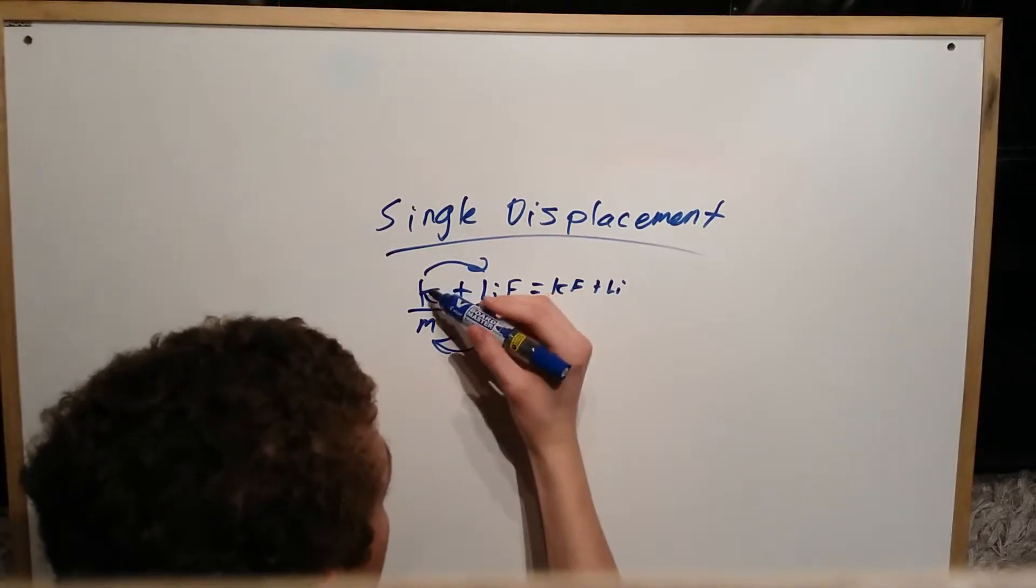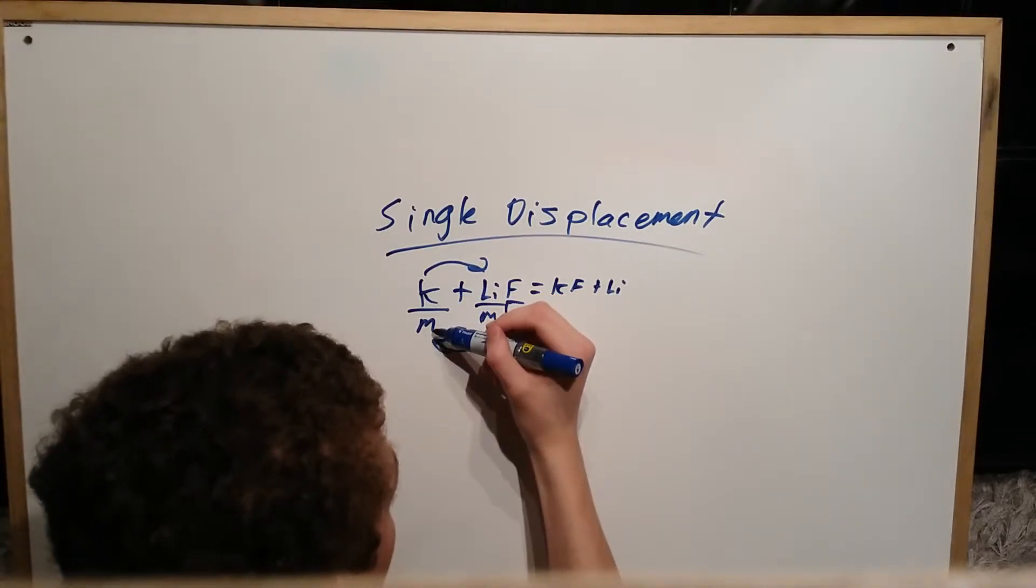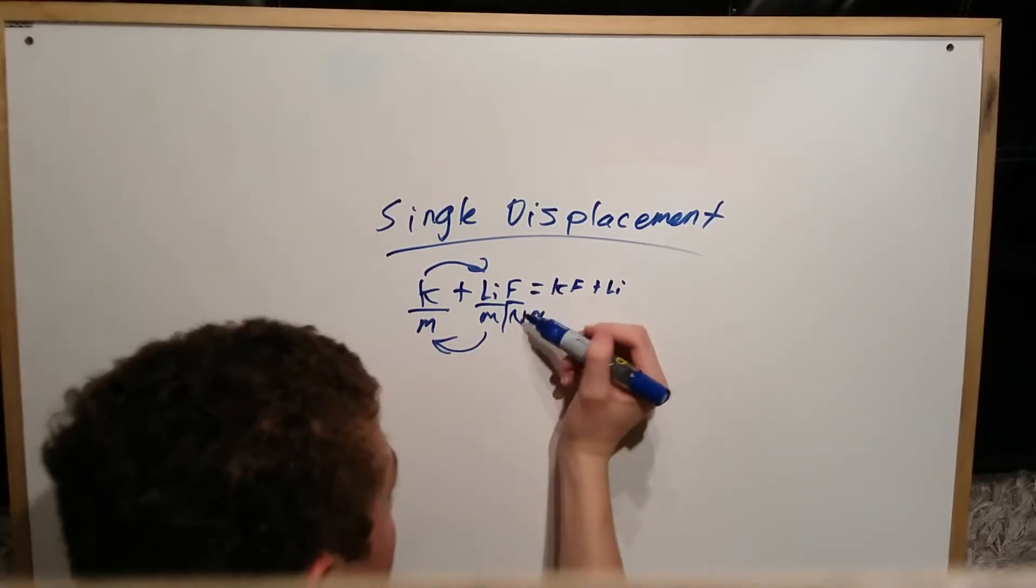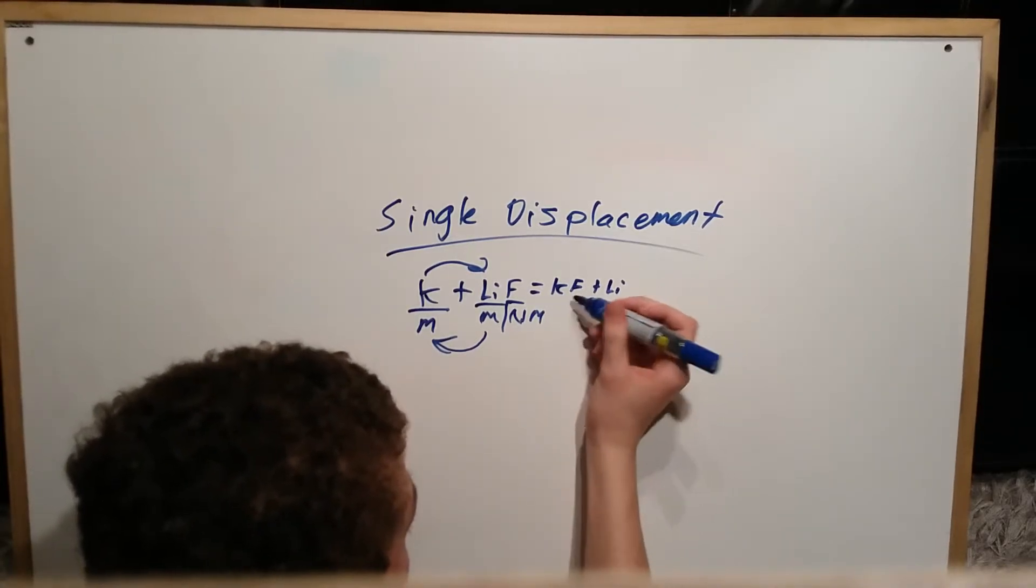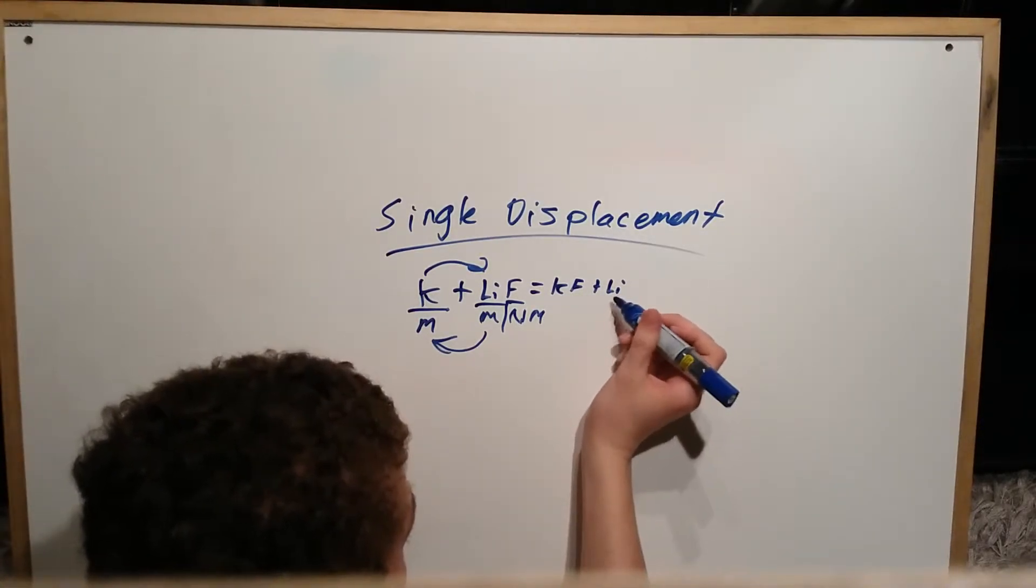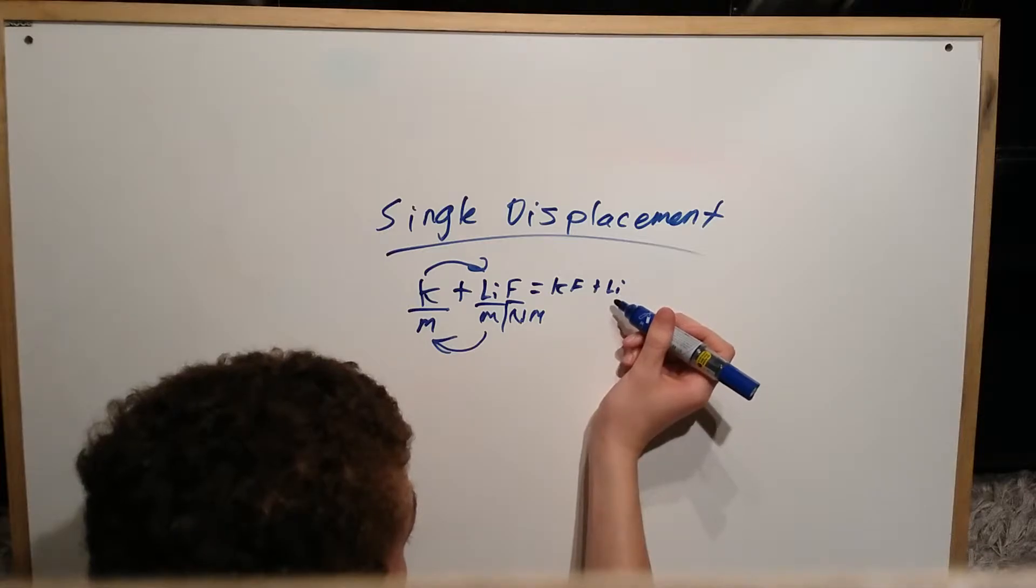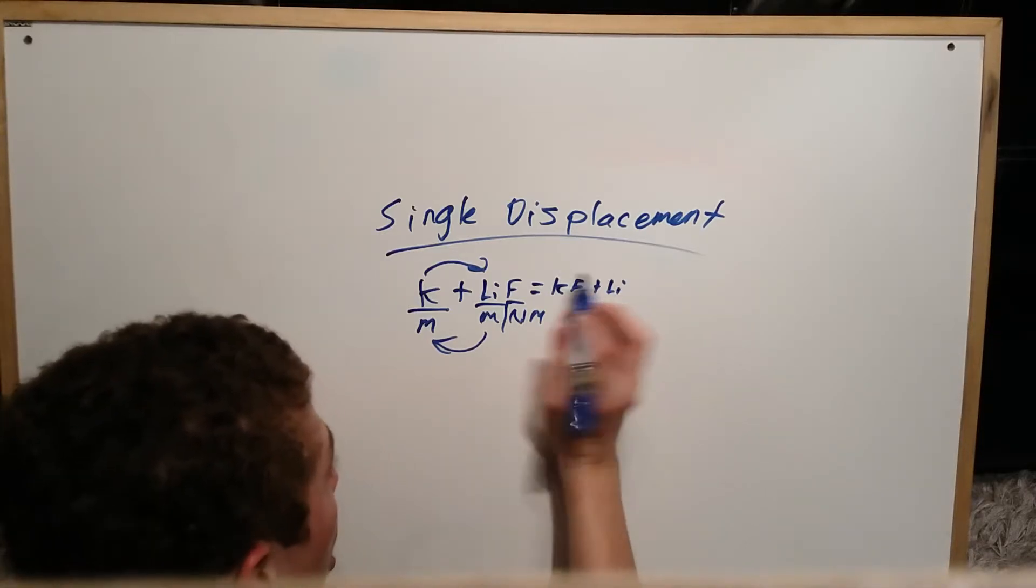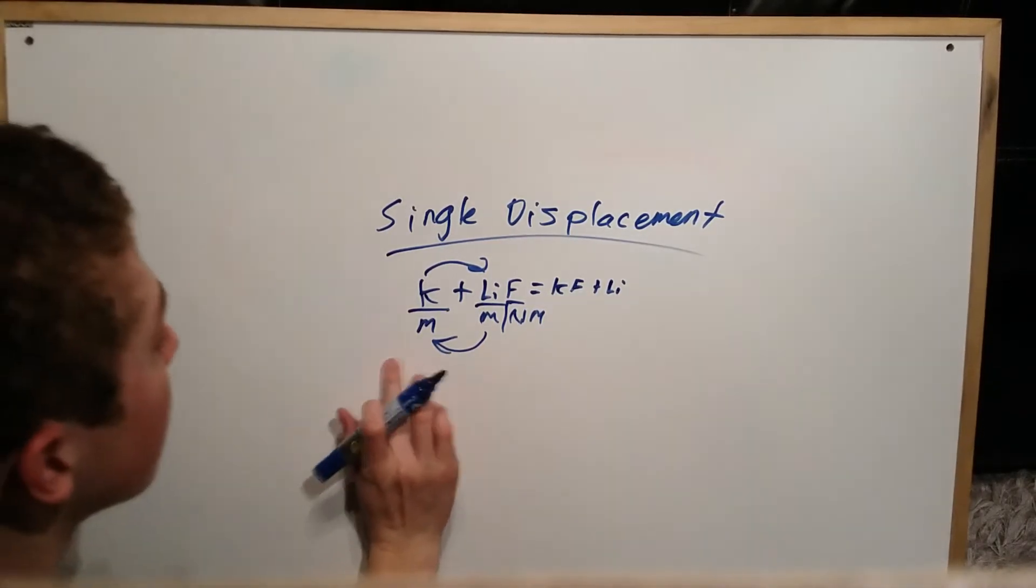So as you can see, K was by itself and it was a metal, and this is a metal. So on this side, K is with the non-metal, and the lithium, which is another metal, is by itself. So all it is, is switching the same element.